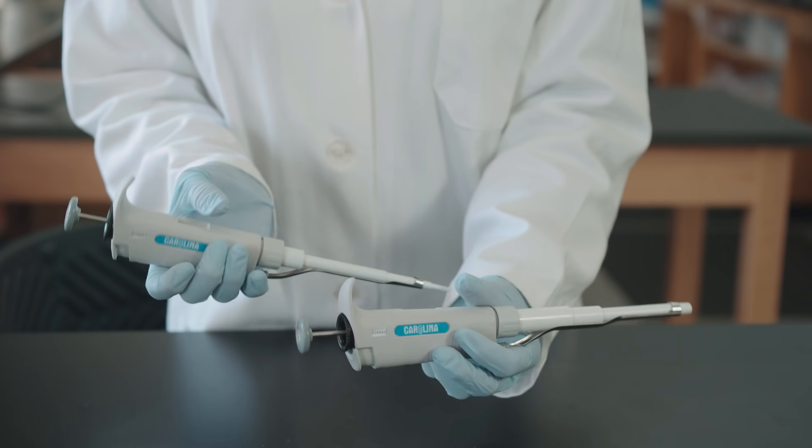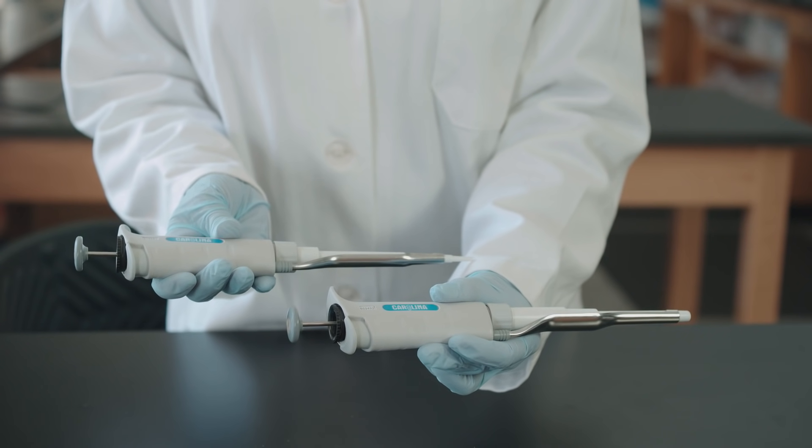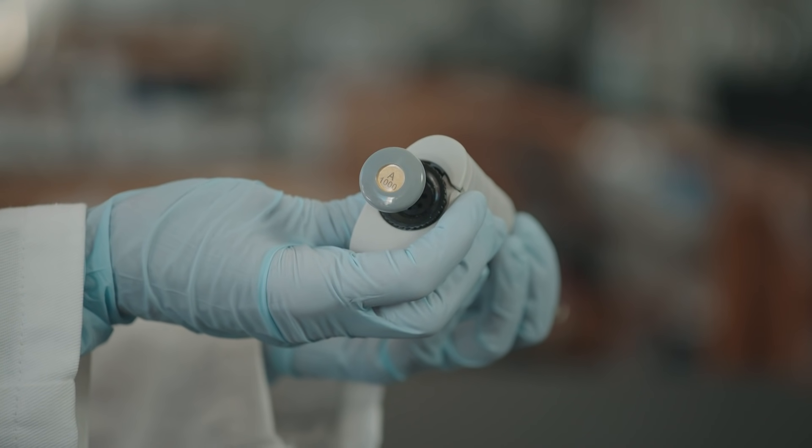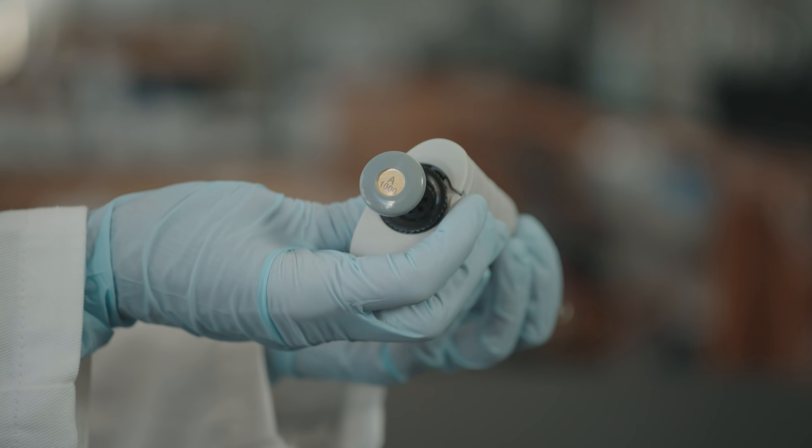Each pipette is marked to indicate what range of volumes the pipette is used to measure. This is a P1000. It is used to measure volumes from 100 microliters to 1000 microliters.